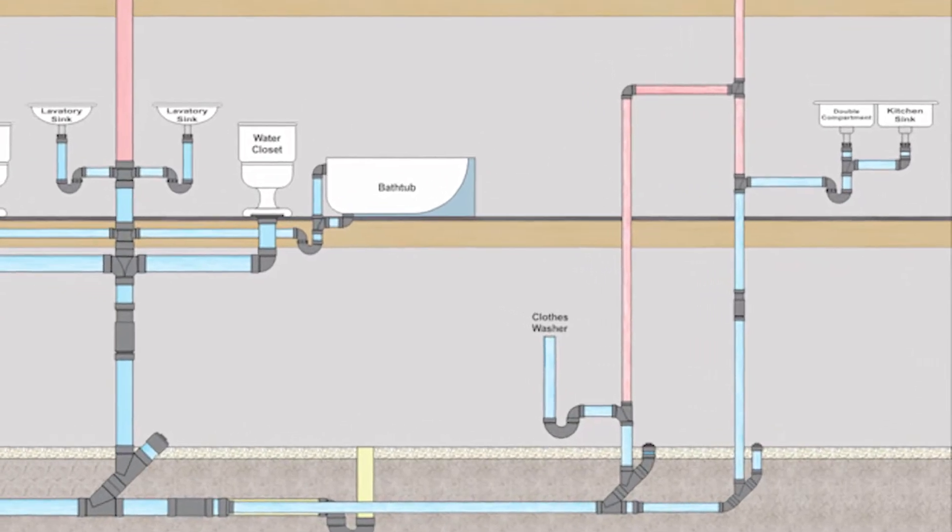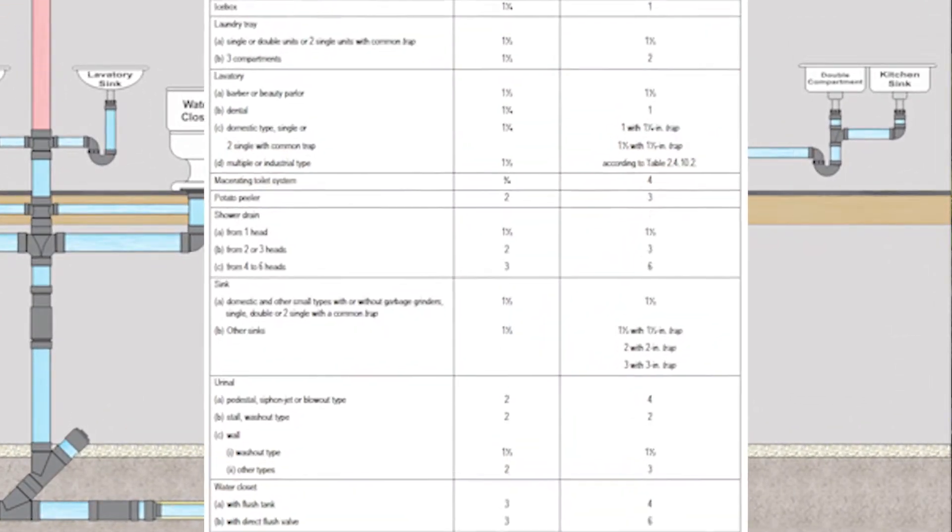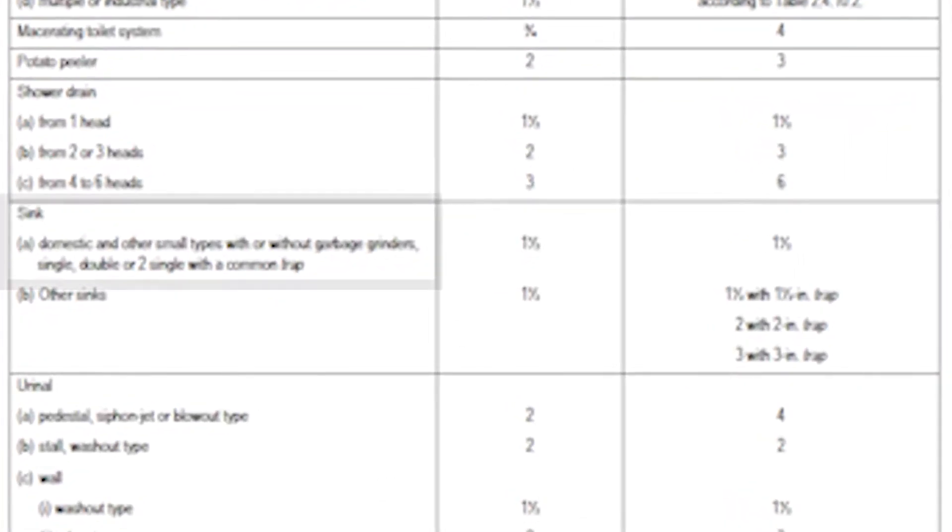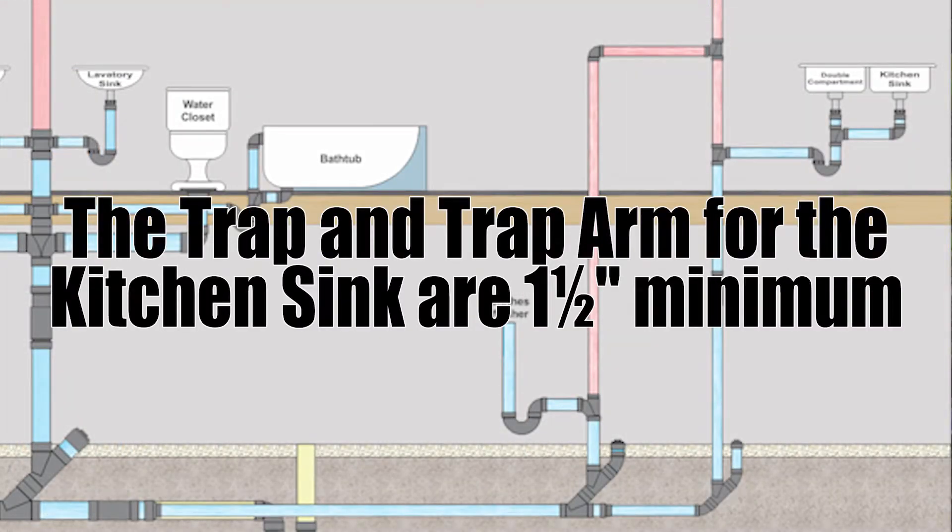Now if we look on the far right side on the main floor we will find a double compartment kitchen sink. In table 2.4.9.3 we need to locate sink domestic and other small types with or without garbage grinders, single double or two singles with a common trap. The minimum size of fixture outlet pipe is one and a half inches and with that we have one and a half fixture units. So the trap and trap arm serving that kitchen sink will be minimum one and a half inches.